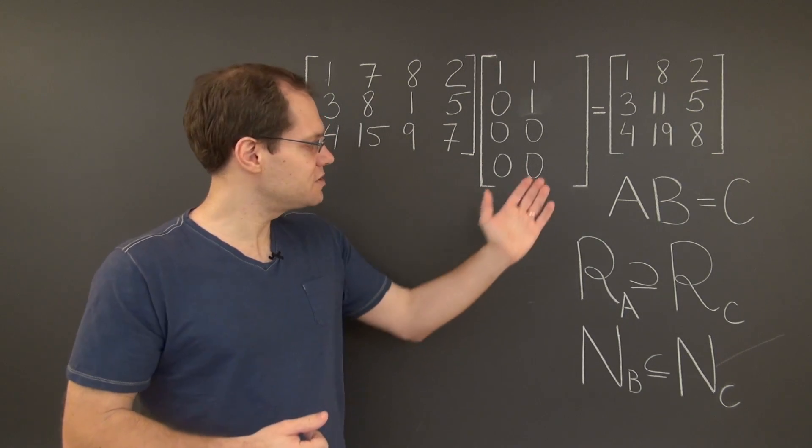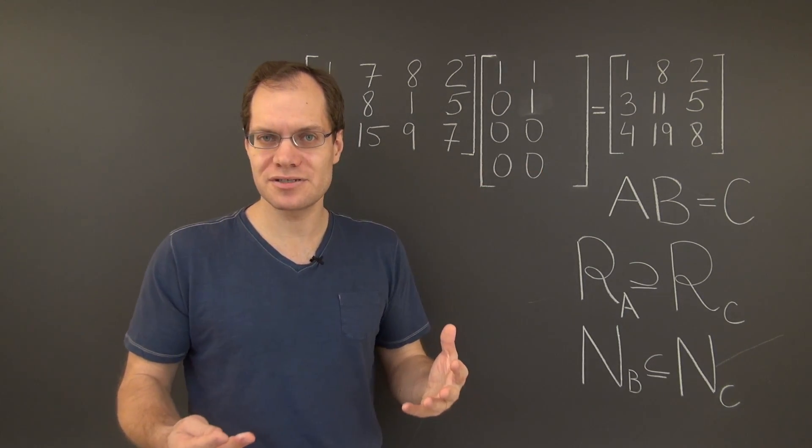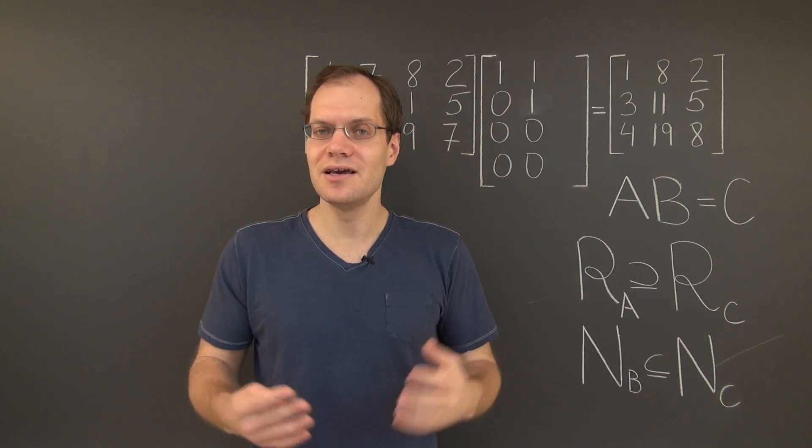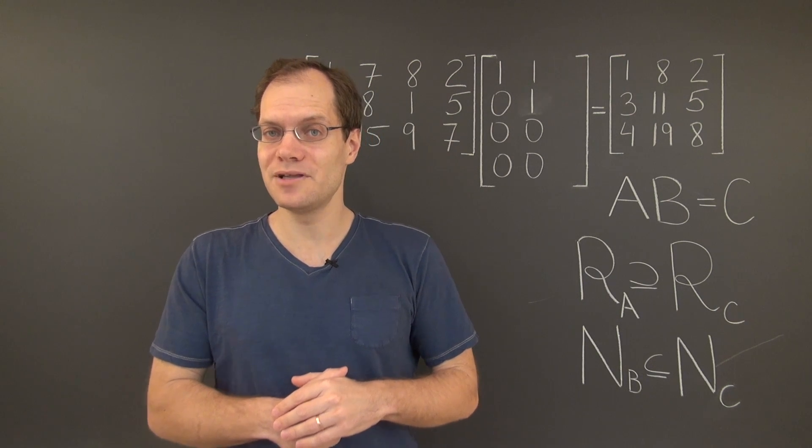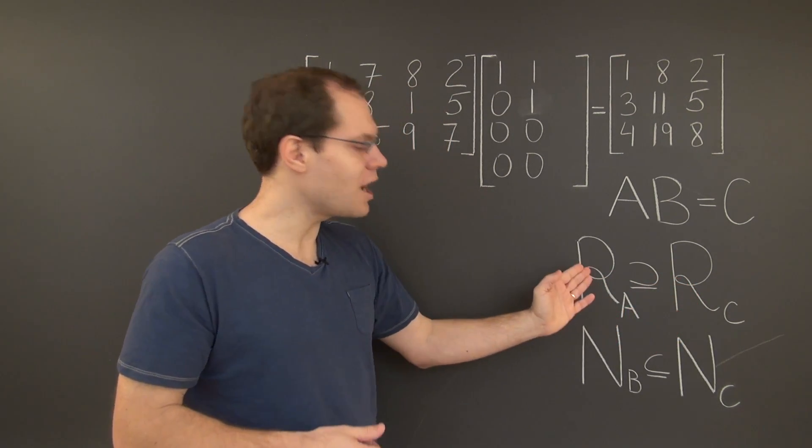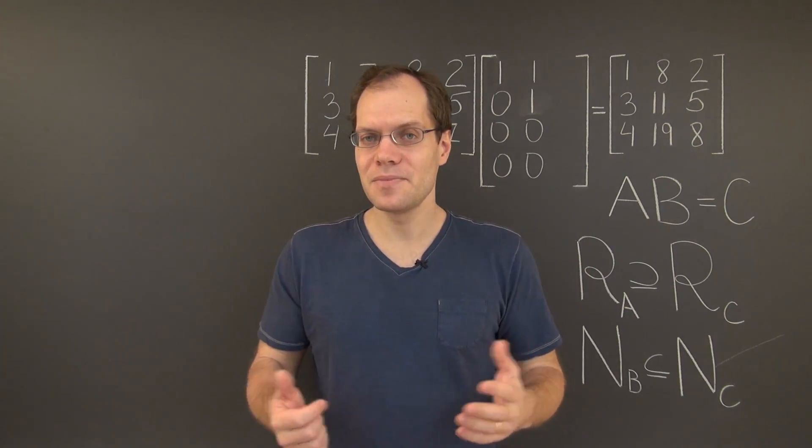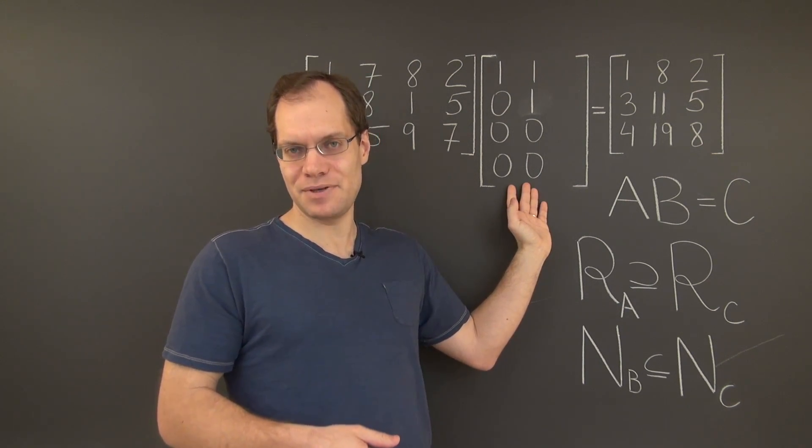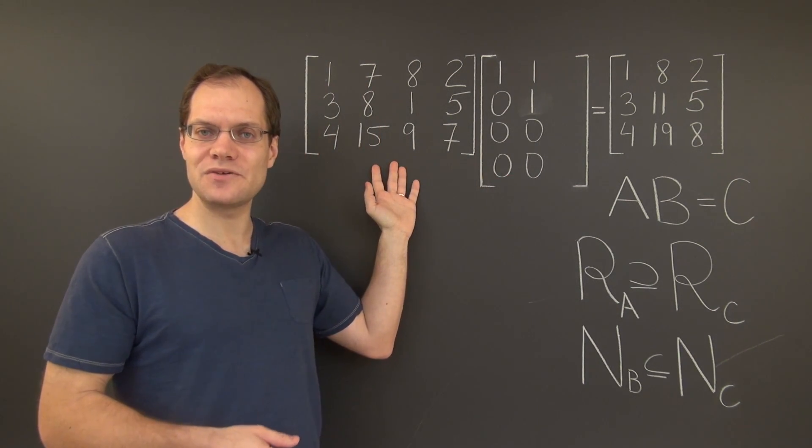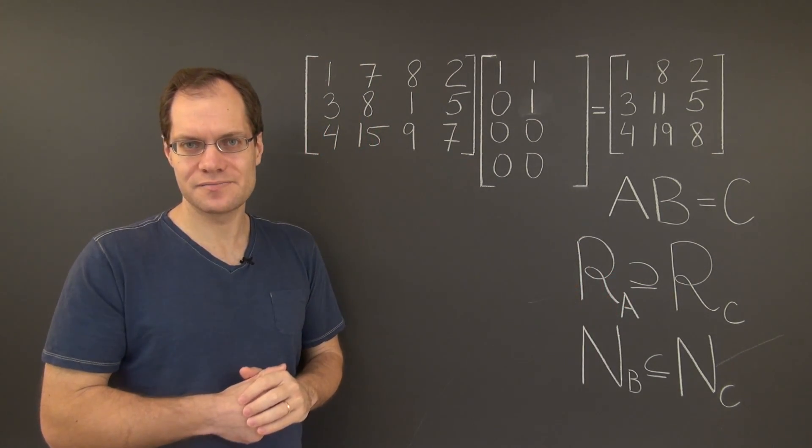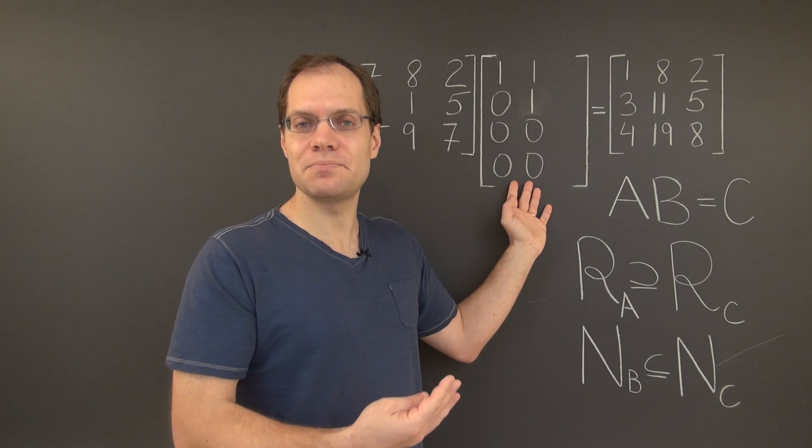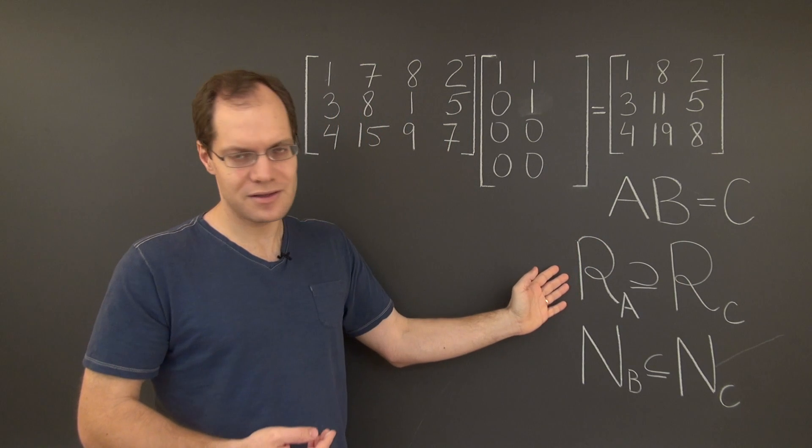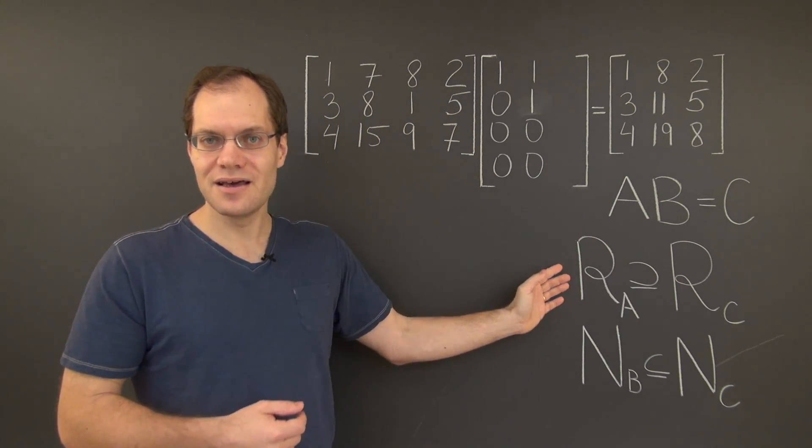To give you an extreme example, if you take the matrix B to be the zero matrix, then C is also the zero matrix. And the column space of C is the trivial space consisting of the zero column alone. So in that case, this would be a proper subspace. Can it be the same? Yes, it can be the same. You just have to take enough linearly independent combinations of the linearly independent columns of A to fill the entire column space. And if there aren't enough linearly independent linear combinations of the columns of A, then the column space of C will not fill the entire column space of A and will be smaller.